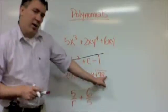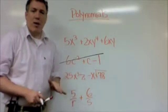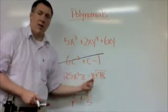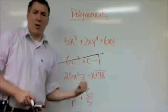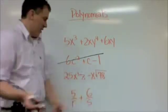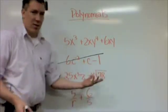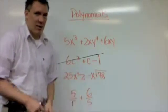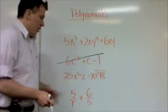If the x was in here, then it would not be a polynomial. But it's not. It's in front of, it's not part of the square root. The square root of 78 is just a number. It's just like 25, except for with lots of decimals after all. So this one's okay.